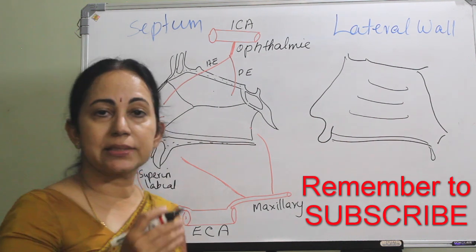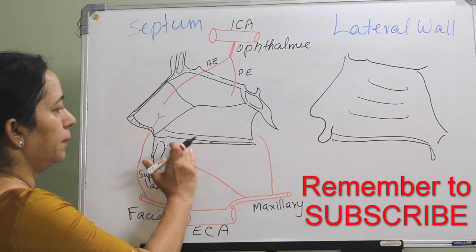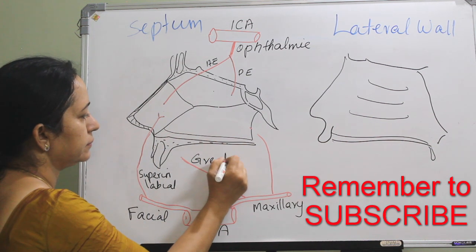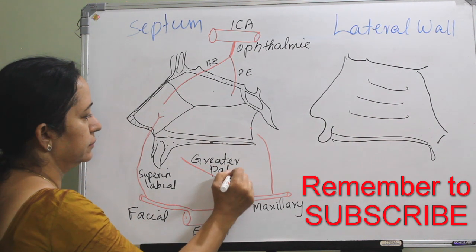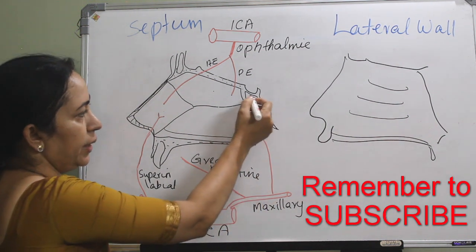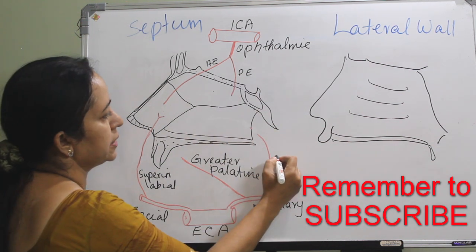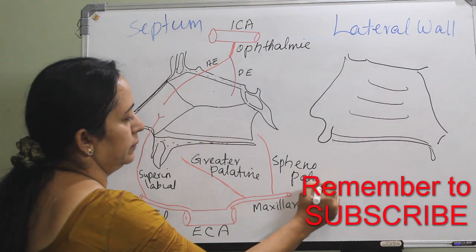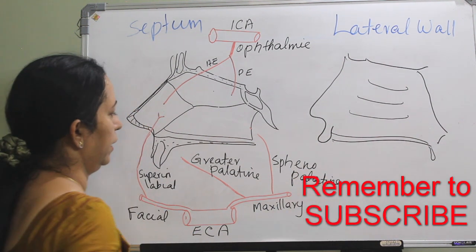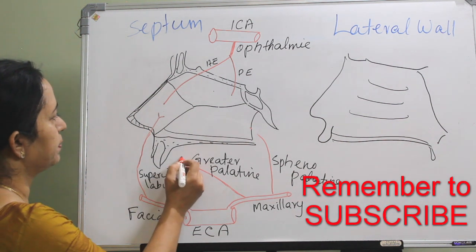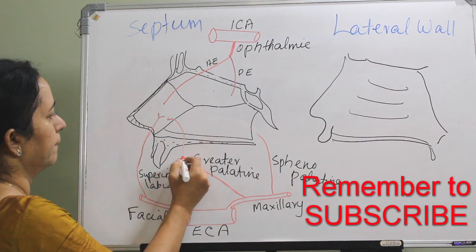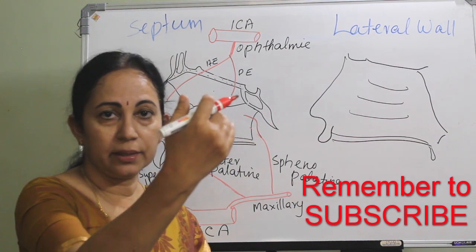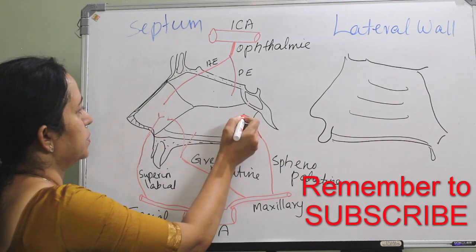From the maxillary artery, two branches are supplied. To the palatine area goes the greater palatine artery. And to the sphenoid area posteriorly goes the sphenopalatine artery. So greater palatine and sphenopalatine — and the sphenopalatine artery goes posteriorly and then comes anteriorly along the septum.